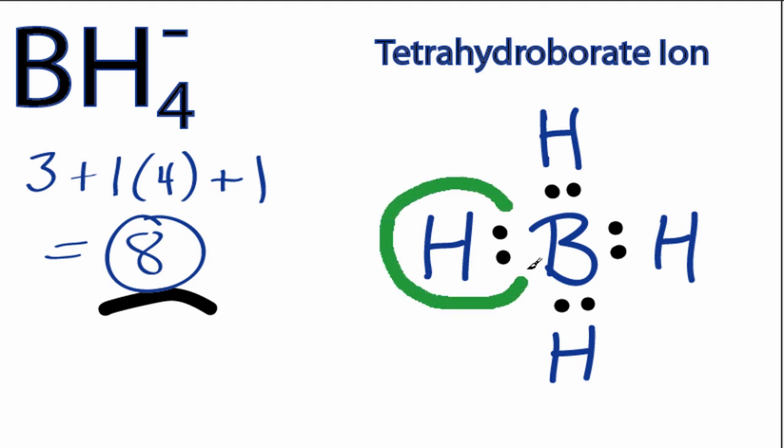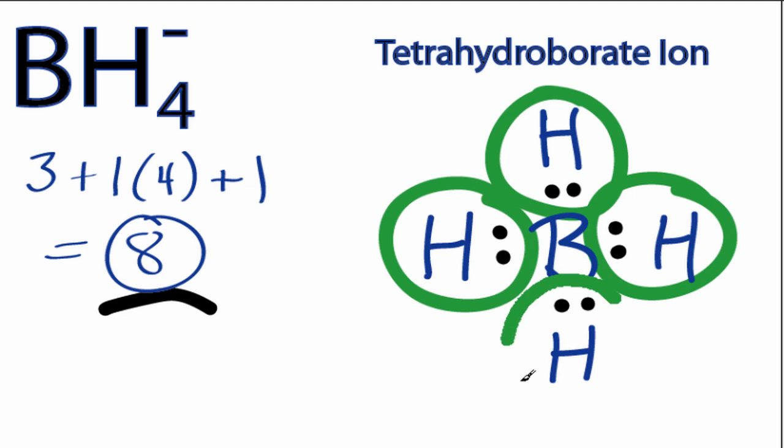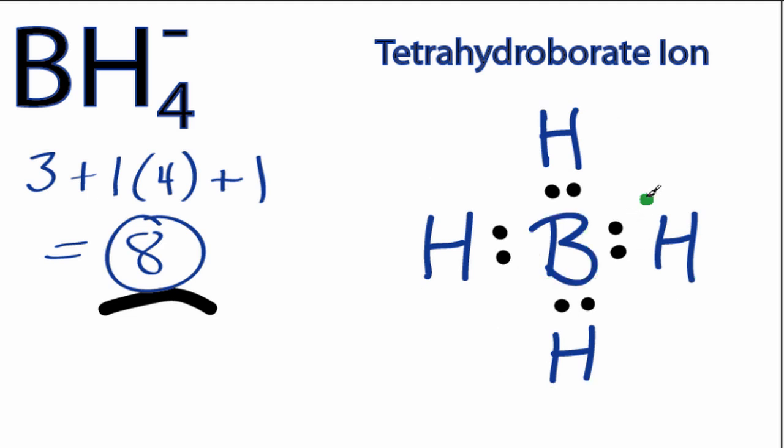Hydrogen only needs 2 valence electrons to have a full outer shell, so each of the hydrogens has its outer shell full, and the boron has 8 valence electrons.